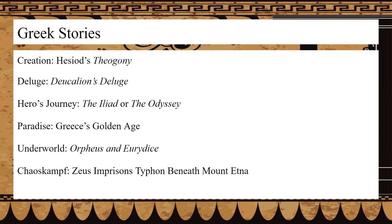Next is the deluge myth: the Deluge of Deucalion and Pyrrha. This notes a deluge sent by Zeus to wipe out the wicked of humanity, sparing only Deucalion and Pyrrha, who were forewarned by the titan Prometheus — who is their father — to build a chest and stow away until the flood subsides.